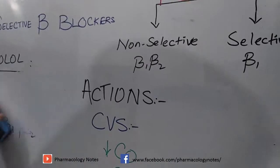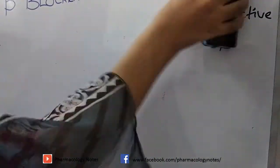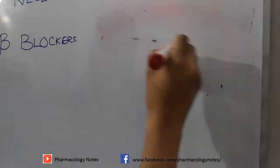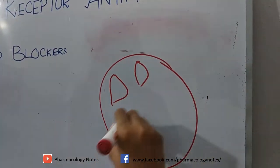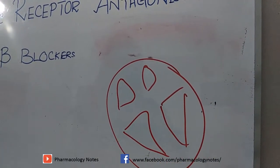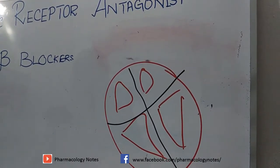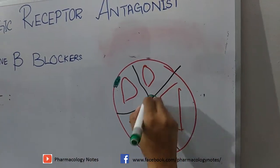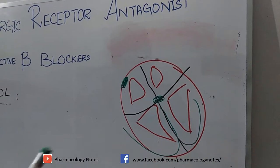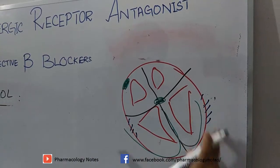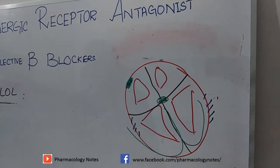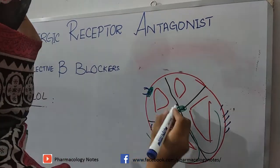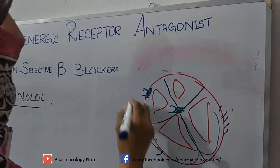Looking at the heart: it consists of atria and ventricles. The SA node is present in the atria, and the AV node is present between the chambers, along with the bundle of His, Purkinje fibers, and the myocardium. The most prominent receptors present on the SA node, AV node, and myocardium are beta-1 receptors.